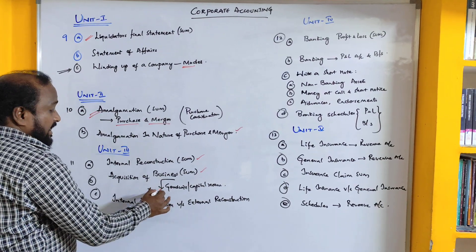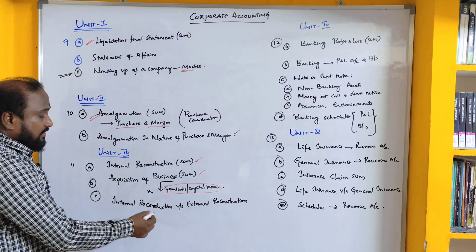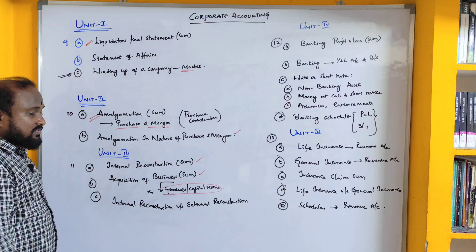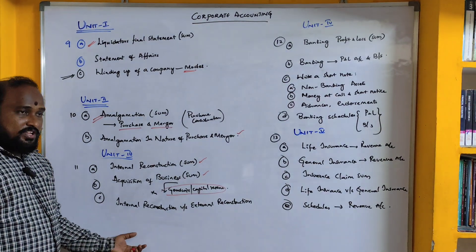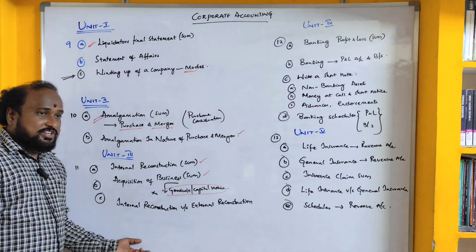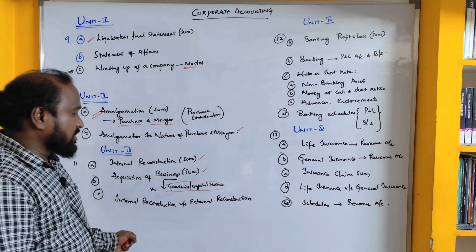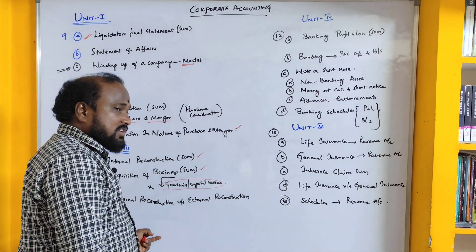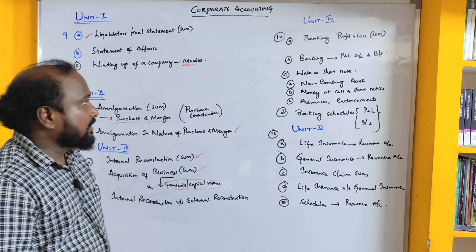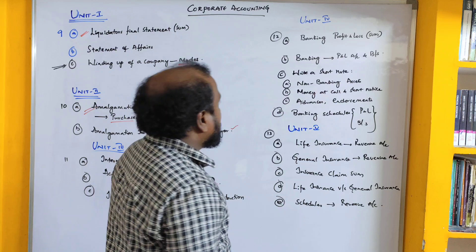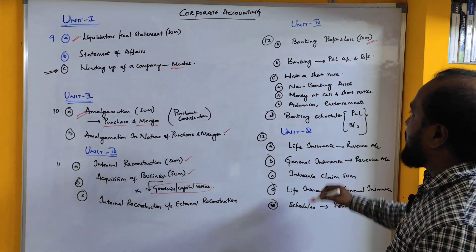From Unit 3, you may also get calculation of goodwill or capital reserve. For theory, internal reconstruction versus external reconstruction will be asked — what is internal reconstruction and what are the various modes of internal reconstruction. For this, you have to write the meaning of internal reconstruction and the journal entries for it. Unit Number 4 covers the banking profit and loss account.